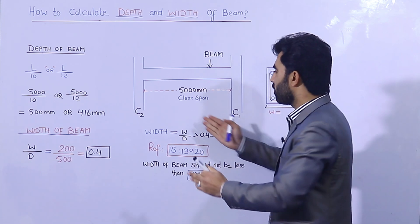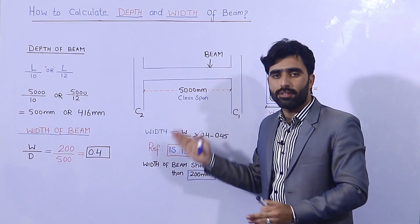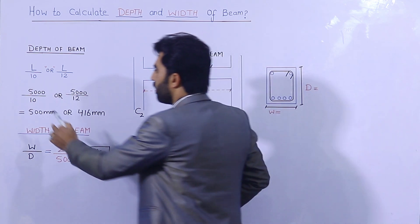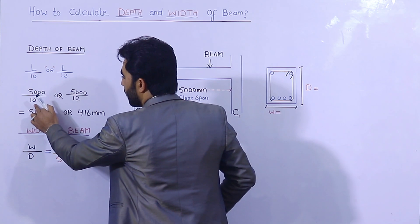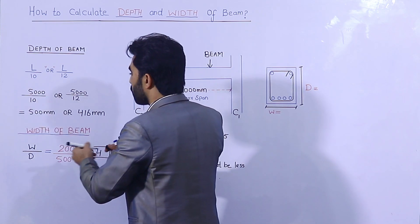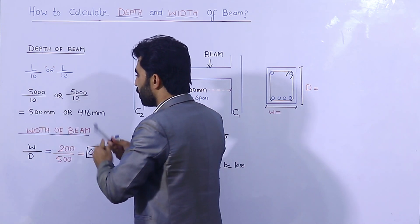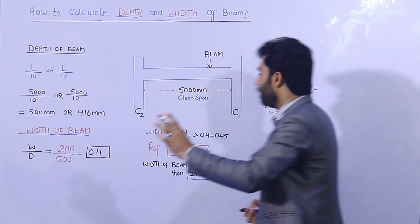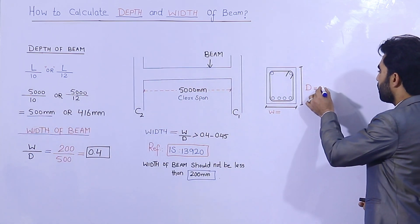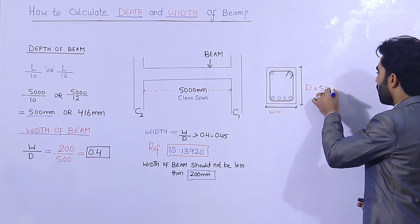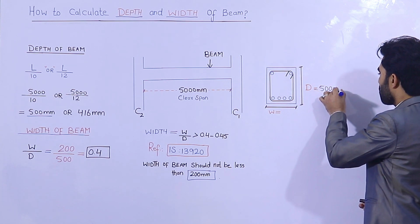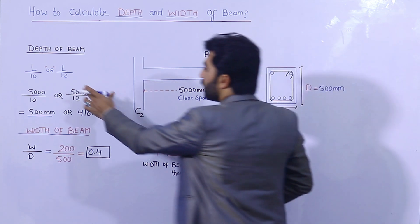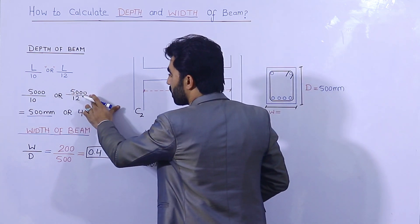The clear span is 5 meters or 5000 mm — it could be 3000 mm, 2500 mm, or 6000 mm in other cases. Using L divided by 10: 5000 divided by 10 gives a depth of 500 mm. So the depth of the beam should be 500 mm.